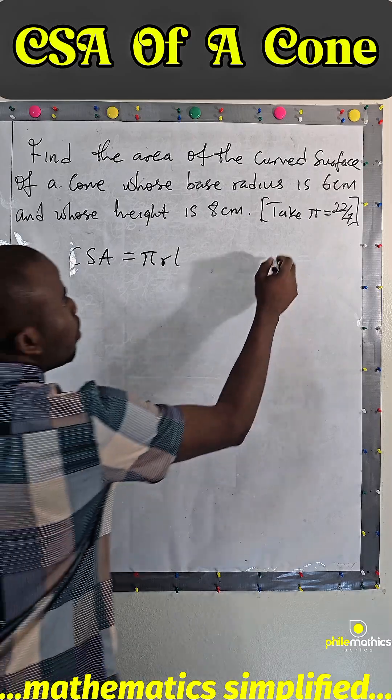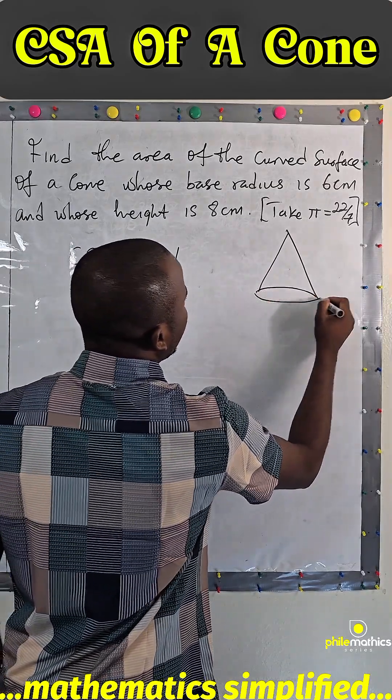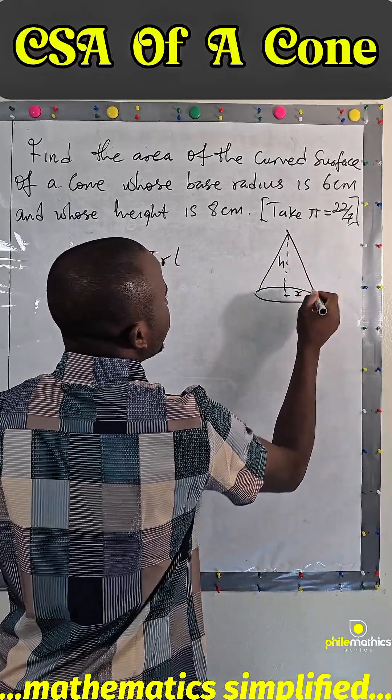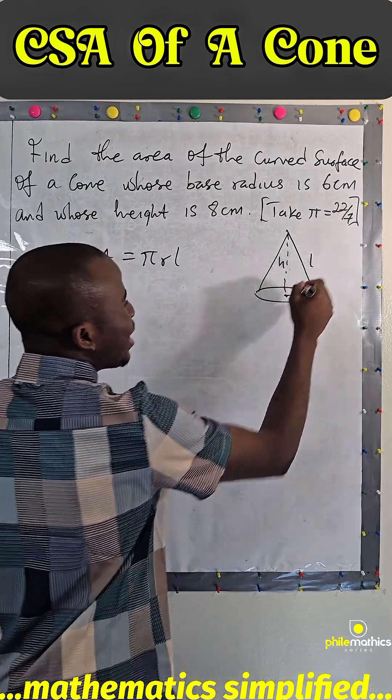Remember a cone: we have the height and we have the base radius, but we don't need the height, we need the slant height.